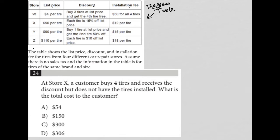The actual question says: At Store X, a customer buys four tires and receives the discount but does not have the tires installed. So there's a discount but no installation. We're at Store X, so I'll cross out this installation fee. What is the total cost to the customer?